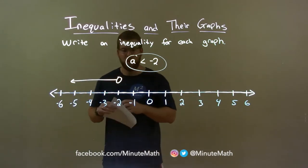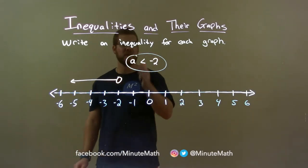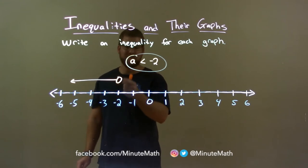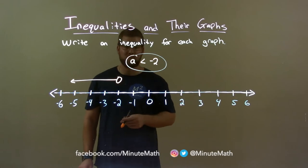So quick recap, we're given the graph below and we have to write the inequality. We choose the variable a here and we said it's shaded to the left, so it's less than sign, it's not equal to because it's an open circle, so a is less than negative 2 is the inequality for this graph.